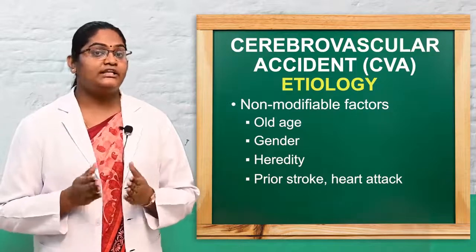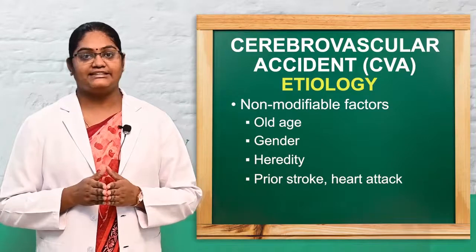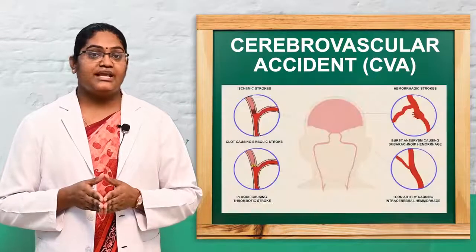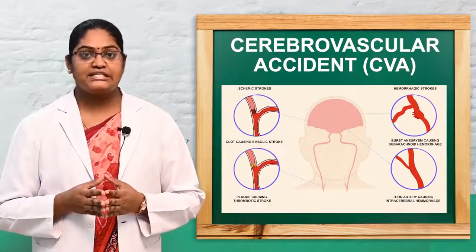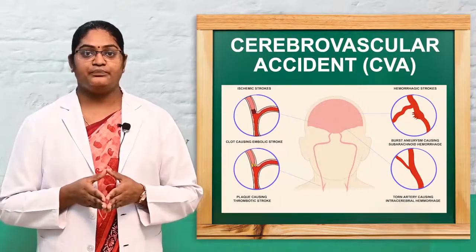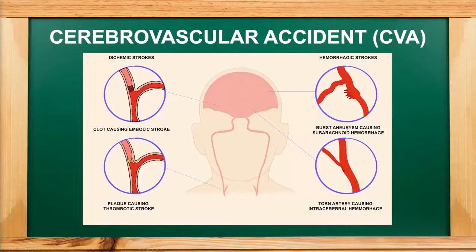Now let's discuss the types of cerebrovascular accident or stroke. There are mainly two types: the first is ischemic stroke, and the second is hemorrhagic stroke. Ischemic stroke accounts for about 85% of strokes. It occurs when arteries or blood vessels are blocked by a thrombus or atherosclerosis, disrupting or decreasing blood supply to the brain.